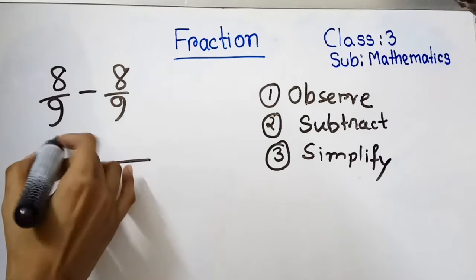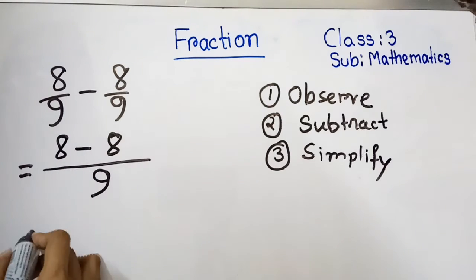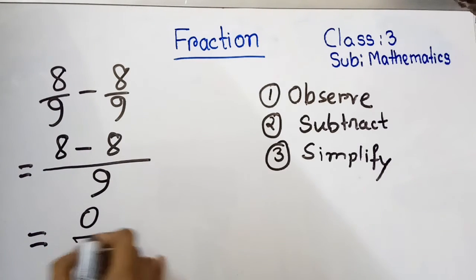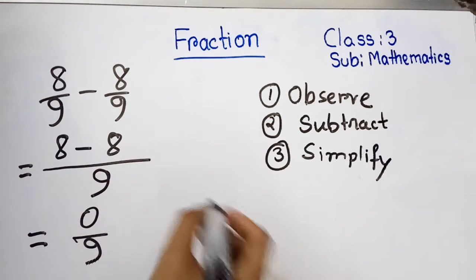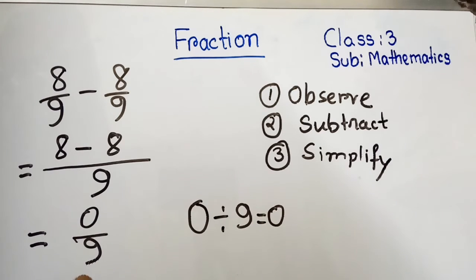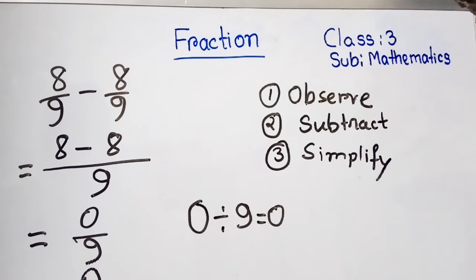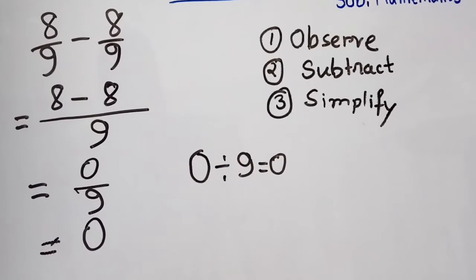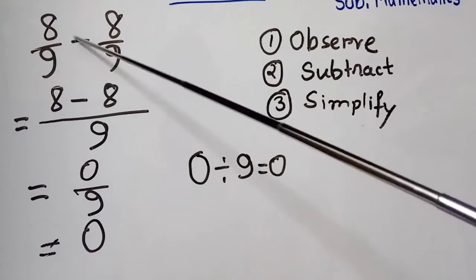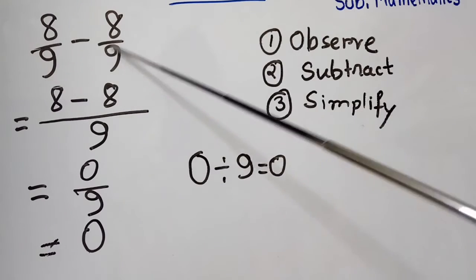We subtract the numerators: 8 minus 8 equals zero. We know that zero divided by anything is zero, so the answer is zero. By simplifying we get zero. Let's observe again: the denominators are the same, so we write nine.